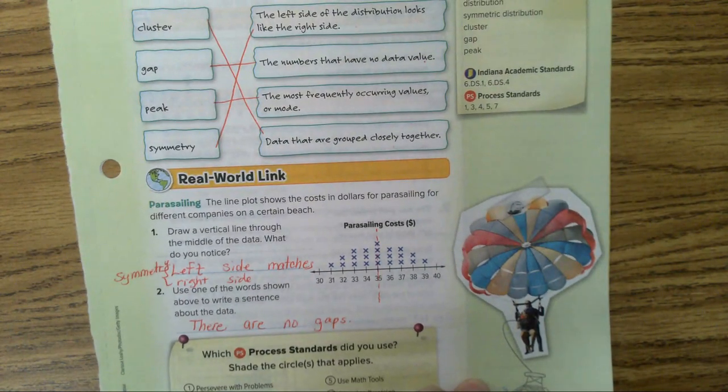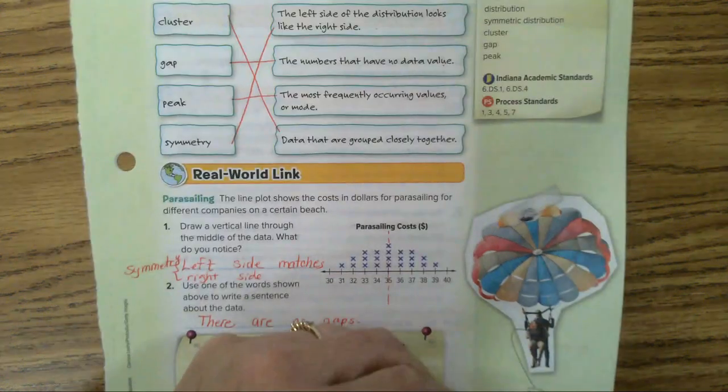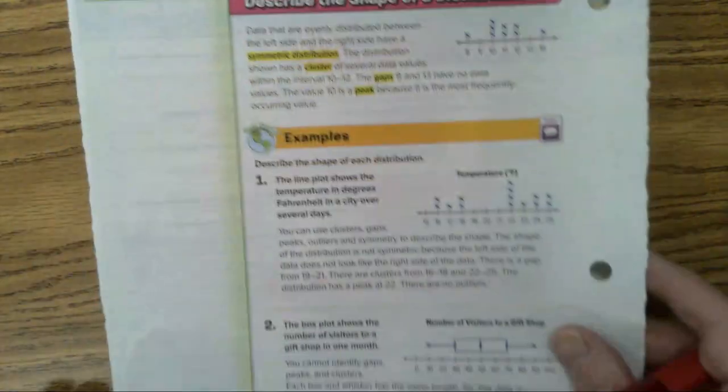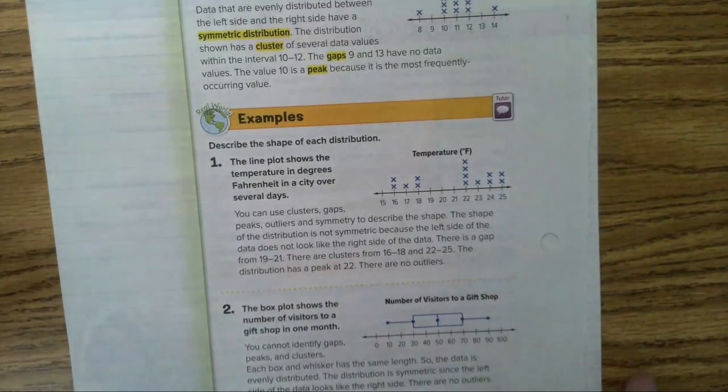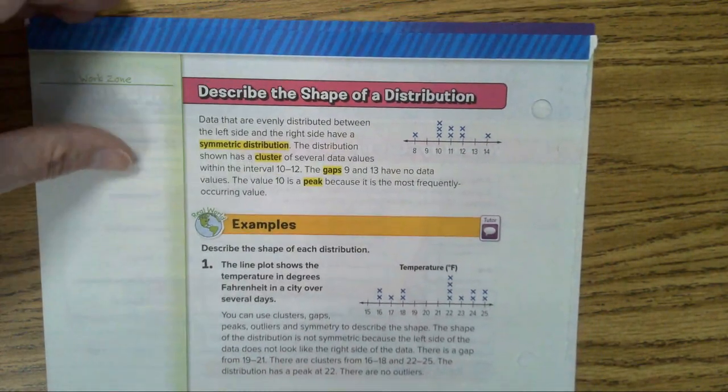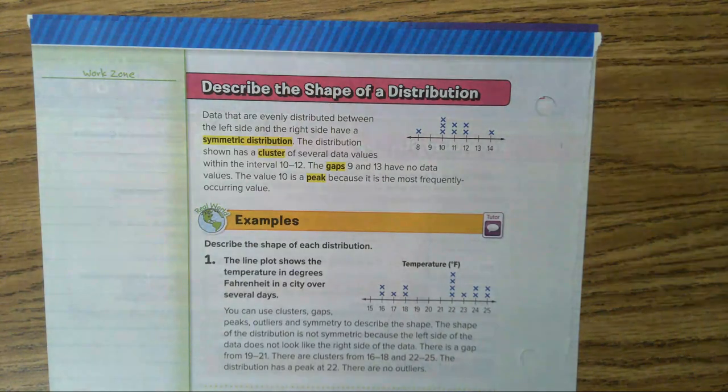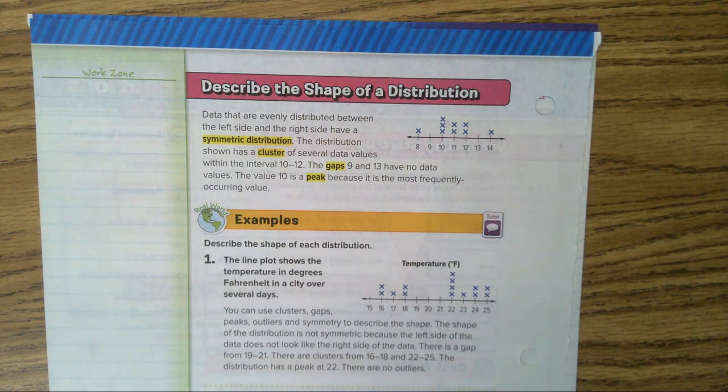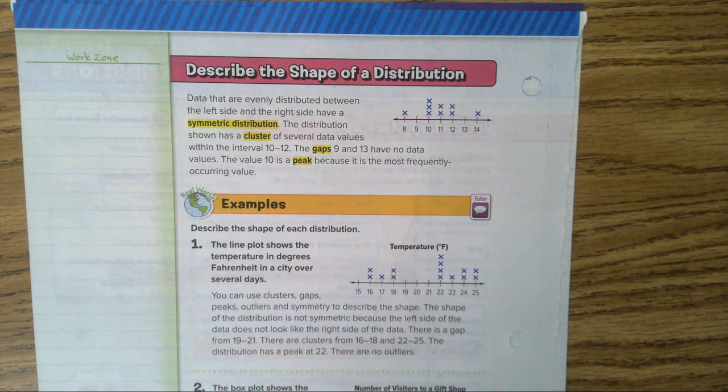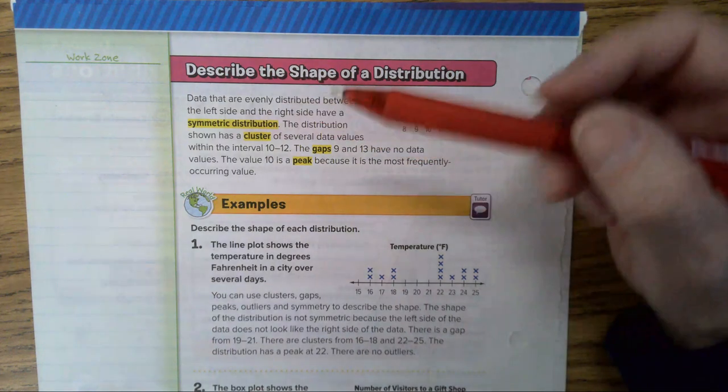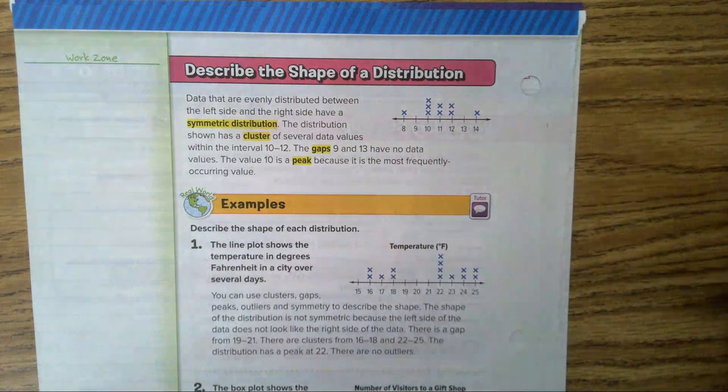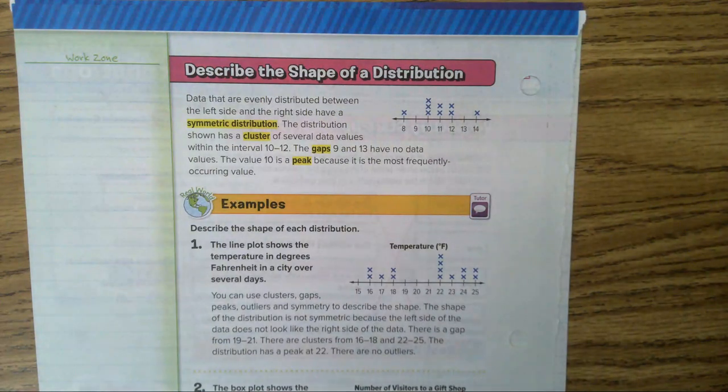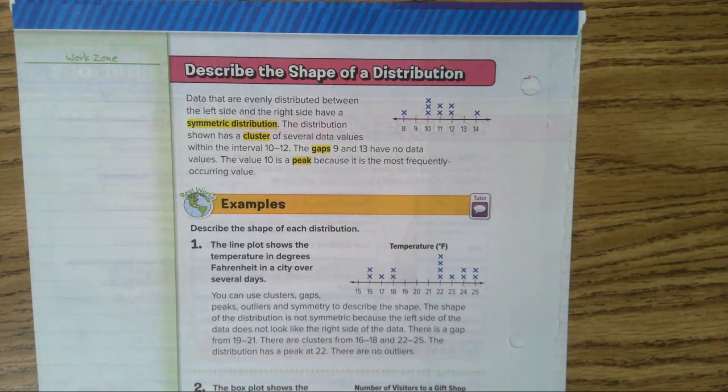Let's turn to page 892. Describe the shape of the distribution. Now this is pretty easy to do. Data that are evenly distributed between the left side and the right side have a symmetric distribution. Put your thumbs up if you remember what that is from the other page that match. If the left side matches the right side, good. Some of you don't know that when the left side matches the right side, it's symmetric.